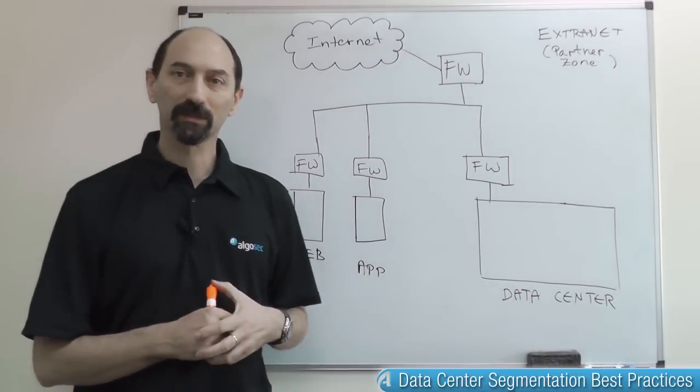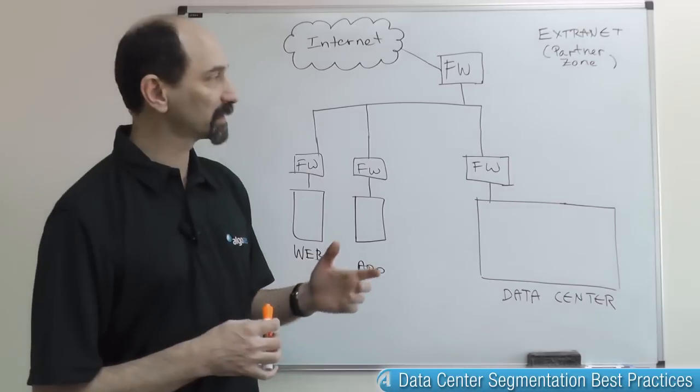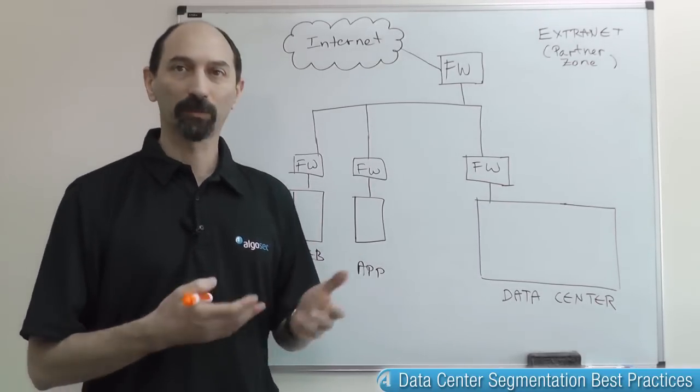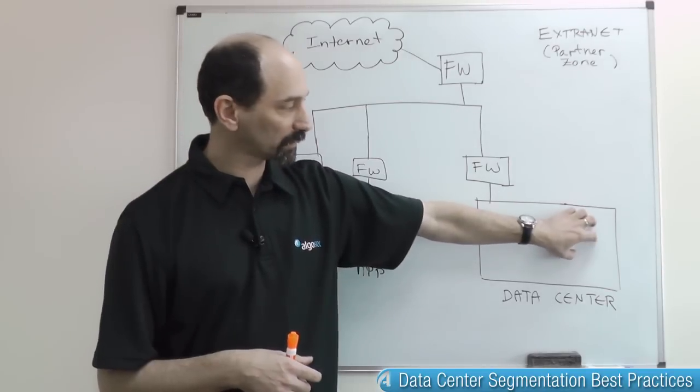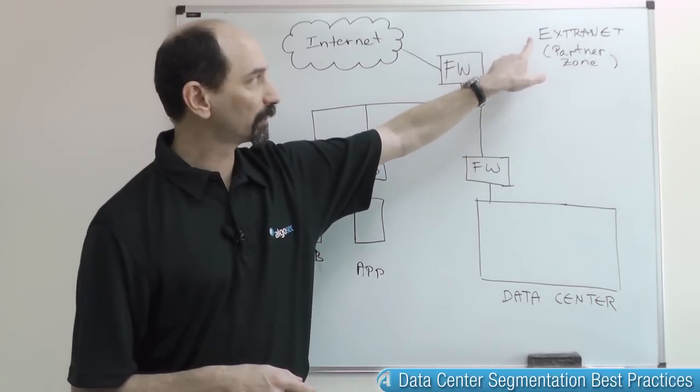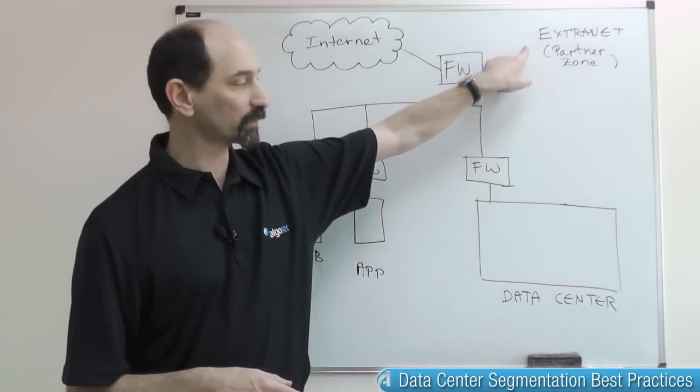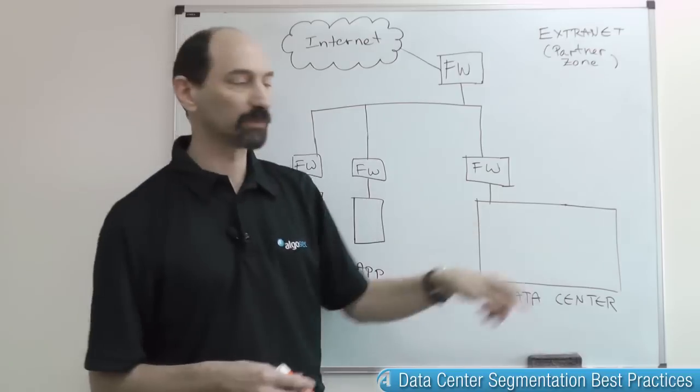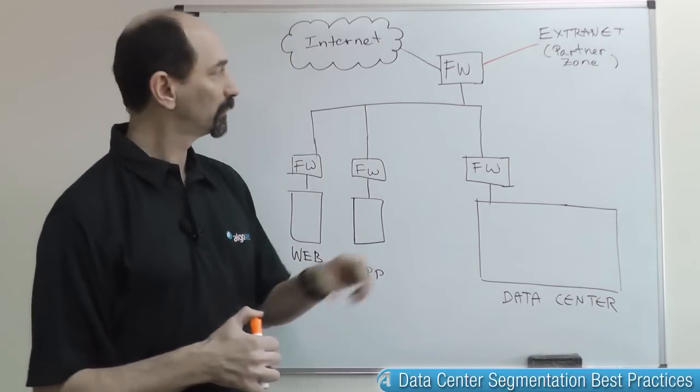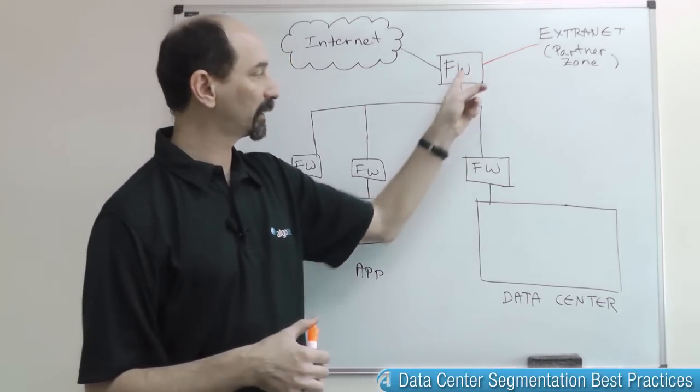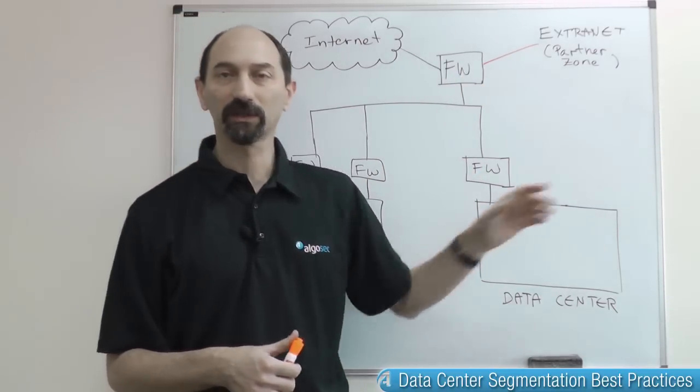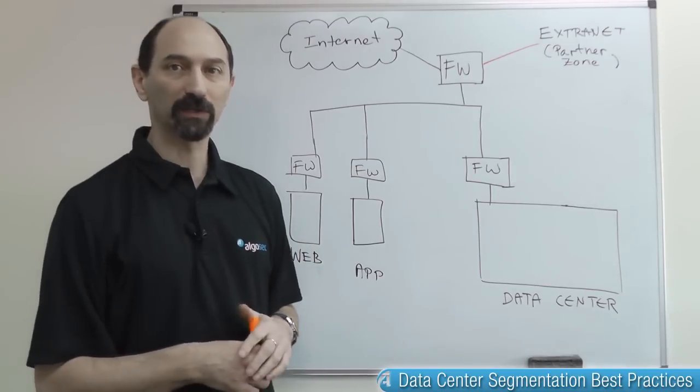But the data center also has other systems that support different needs. For instance, suppose you have an HR provider that needs access to your payroll records. So the payroll system is also in the data center. And you need access to your partner from your extranet into the data center. So how would you do that? Well, you would connect your partner to the corporate firewall and then they can have access through the corporate firewall and the data center firewall. They can reach the data center and they can access the records that they need.